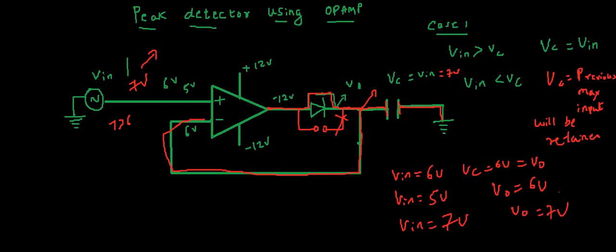If you see this trend, if V in becomes less, the output will be still the previous maximum. However if V in is greater than the previous inputs, the output will take up the latest value of input. So it will follow the peak value of input. Hence the name peak detector. This is highly precise since we are using op-amp. So you can also call it precision peak detector or peak detector using op-amp.